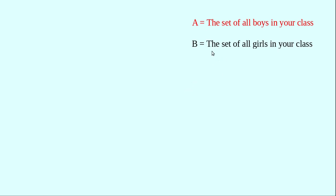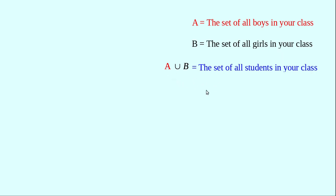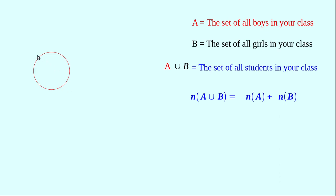You know that the two sets are disjoint — no element in A is in B and no element in B is in A. Now, what is A union B? A union B is the set of all students in your class. How can we find n(A∪B)? n(A∪B) is the total number of students in your class, which is the sum of the number of boys plus the number of girls — that is n(A) + n(B). Here the two sets are disjoint. We can clarify this result using a Venn diagram.